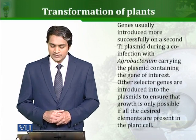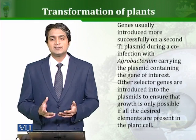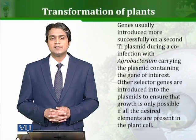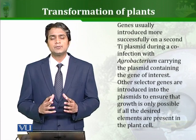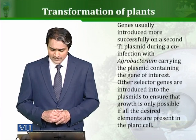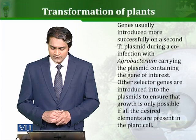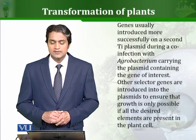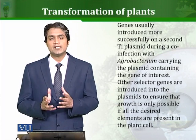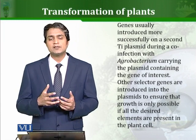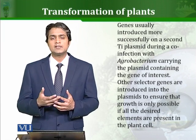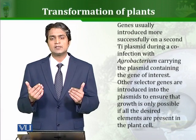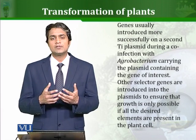Genes are usually introduced more successfully on a second binary plasmid during co-infection with Agrobacterium. Co-infection can be used to enhance efficiency, as it allows two proteins to go into plants at the same time. Other selected genes are also introduced into plasmids to ensure that growth is only possible if all the desired elements are present in the cell. You can make combinations of different plasmids — Ti plasmids made recombinant with respect to different genes — so that genes of interest can reside in different vectors, and co-infection gives better results.